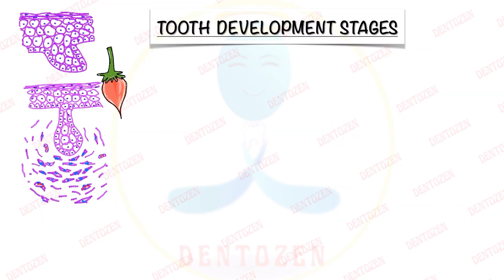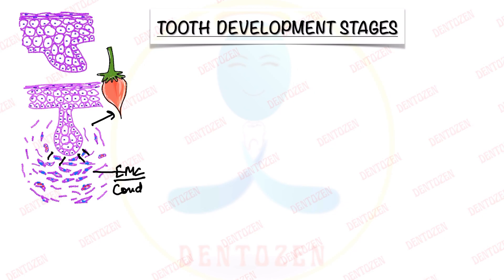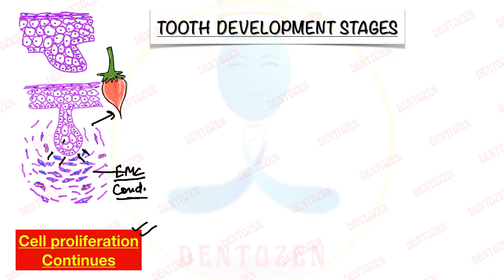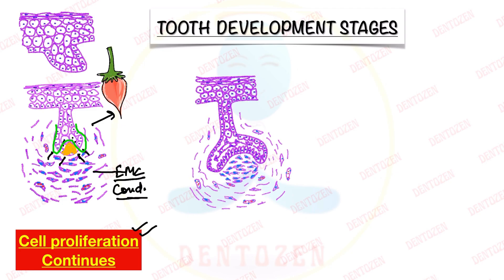Initially the enamel organ is bud-shaped. Below the enamel organ, ectomesenchymal cells condense and come closer to this swelling — this is called ectomesenchymal condensation. Within the enamel organ, cell proliferation continues, but not uniformly: the central cells are lazy and divide slowly, whereas the peripheral cells divide rapidly. Because of this difference, the shape of the enamel organ changes from bud shape to cap shape.